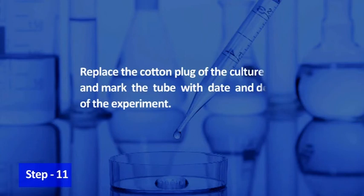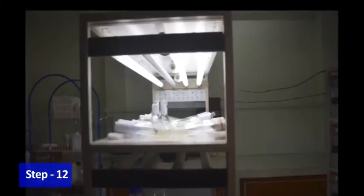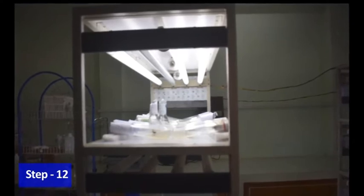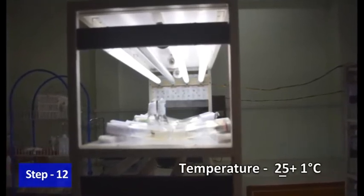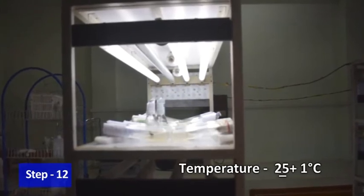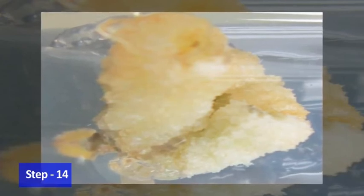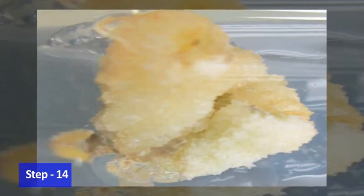Replace the cotton plug of the culture tube and mark the tube with the date and details of the experiment. Now incubate the culture tubes in a growth chamber provided with 16 hours light and temperature maintained at 25 ± 1°C for 5–6 weeks. Observe the culture every week. After about 2 weeks, callus may start appearing on the surface of the explants and friable callus will be formed after about 4 weeks. The growth curve for the callus was established by measuring fresh weight at 4-day intervals during a 32-day period, followed by subculturing every 32nd day.